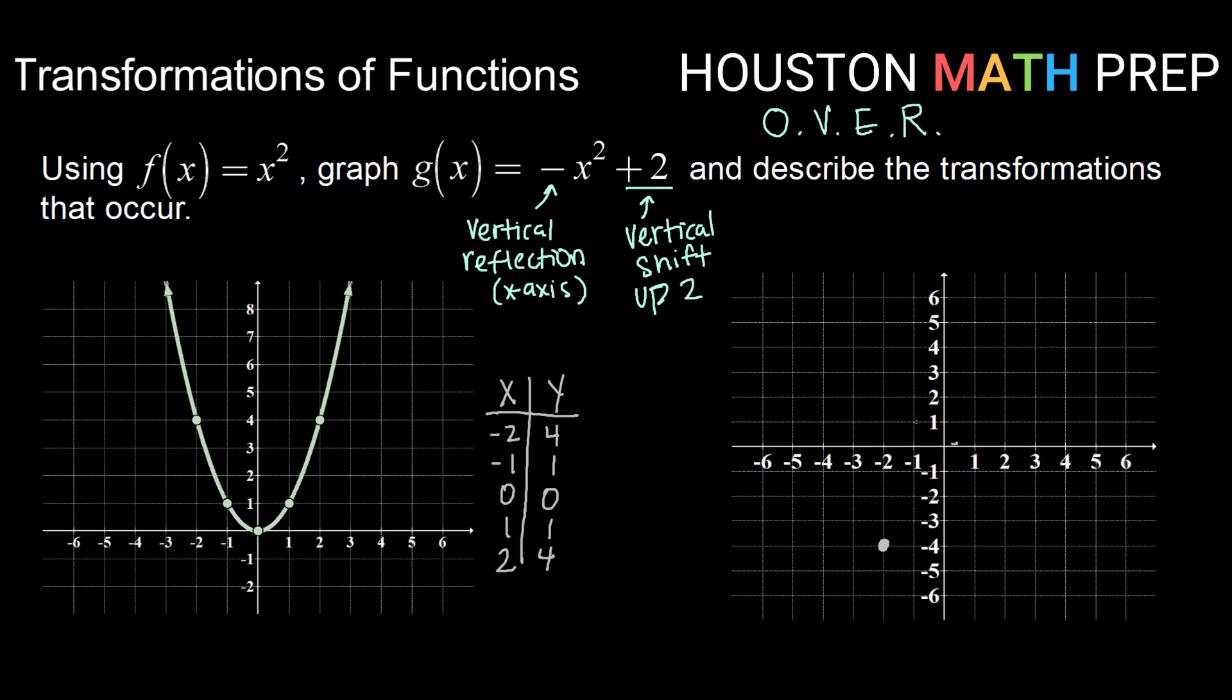Taking my point at negative 1, 1 and reflecting, since I'm 1 up, I'll go instead 1 down. Taking my next point at 0, 0, I'm 0 up, so when I try to reflect that, I get 0 down, so that one actually doesn't move based on the reflection. 1, 1, if I'm 1 up, then a reflection puts me 1 down. And 2, 4, if I'm 4 up, then a reflection will take me 4 down. Okay, so there are my points after one of my transformations. That's my vertical reflection.